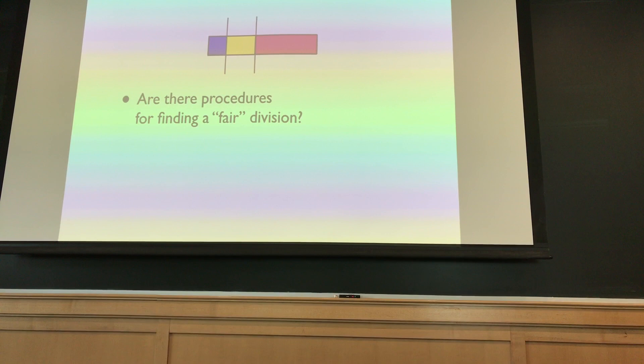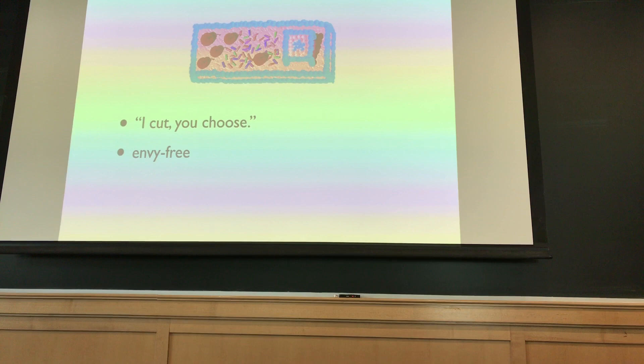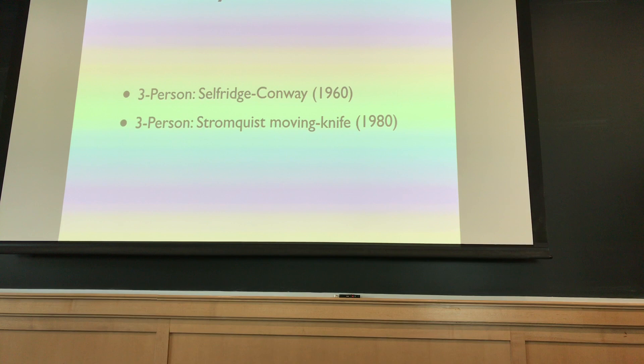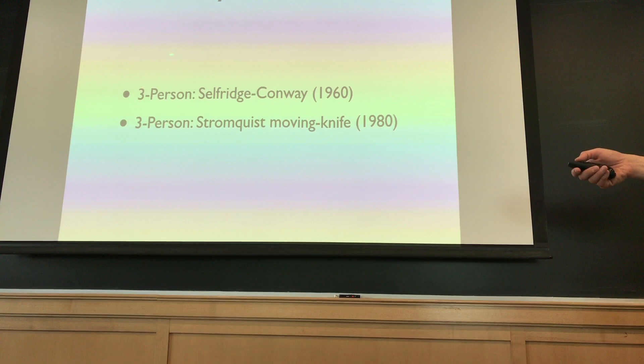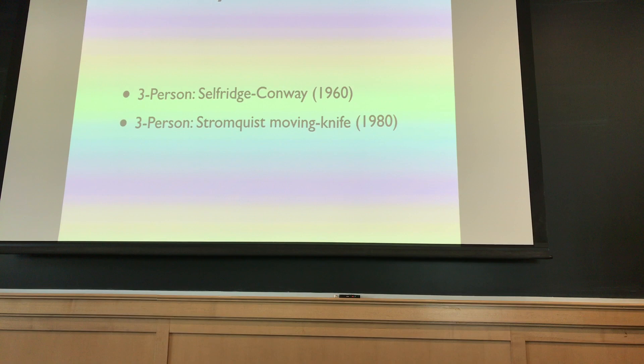We're going to focus on envy-free division. Are there procedures for finding a fair division? For two people, the famous method is I-cut-you-choose. There is a more complicated three-person procedure. Cutting algorithms divide into continuous procedures and discrete procedures. A continuous procedure is the moving knife: I move my knives over the cake and you say cut when you want. That's a continuous type procedure.